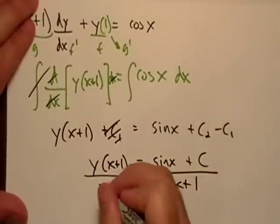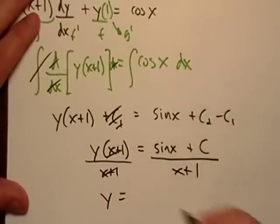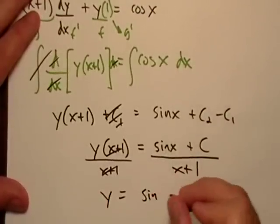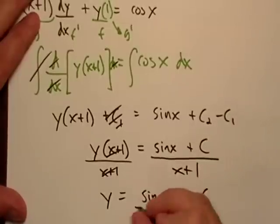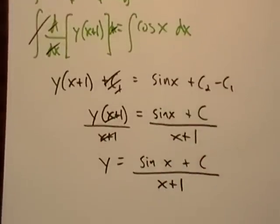I could do it like that. That's not a problem. So y is equal to sine of x plus c over x plus one.